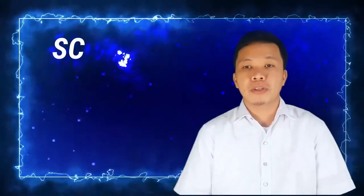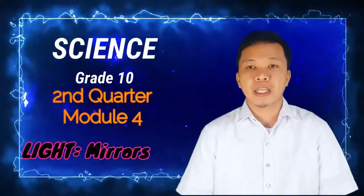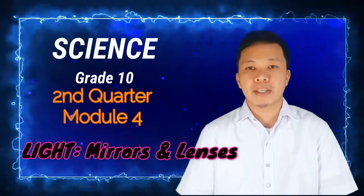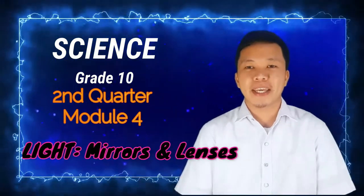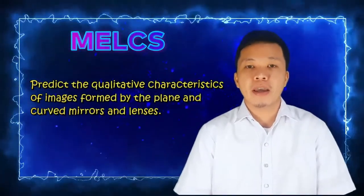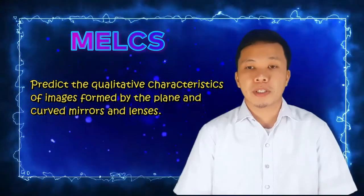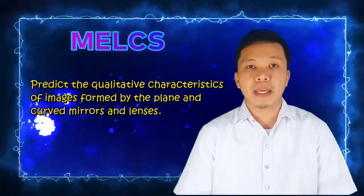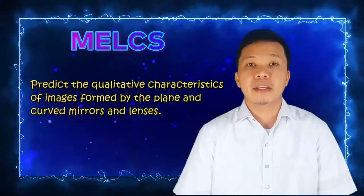Now, before we begin our discussion, make sure that you have called the presence of our Lord through a short prayer so that you can understand clearly our lesson for today. Our lesson for today is all about light, specifically mirrors and lenses. This lesson is in grade 10, second quarter, module 4. And the most essential learning competency for this module is: predict the qualitative characteristics of images formed by plane and curved mirrors and lenses.